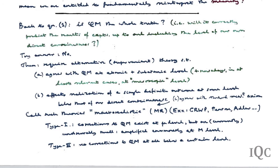Macro-realistic theories divide into two general categories. Type 1: corrections to quantum mechanical predictions already exist at the level of electrons and atoms but are so tiny as to be currently undetectable. They become amplified on the way up so that by the level of Schrödinger's cat they make a big difference. The GRWP theory has this character, as does Penrose's theory.